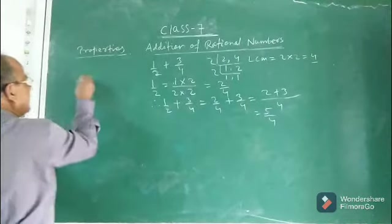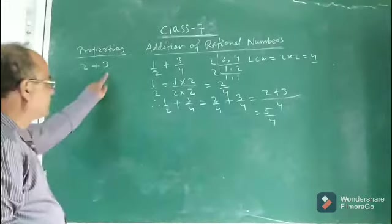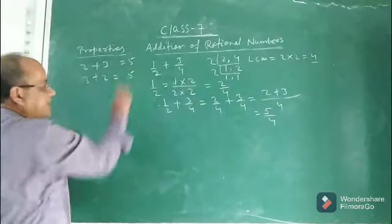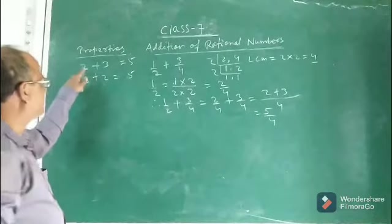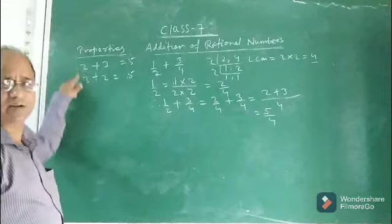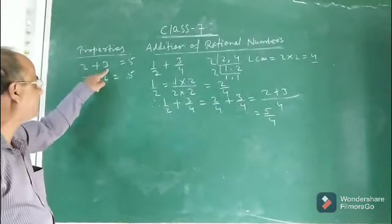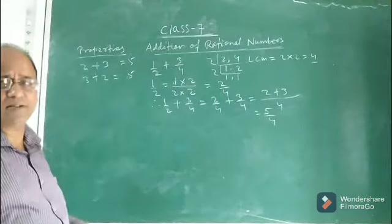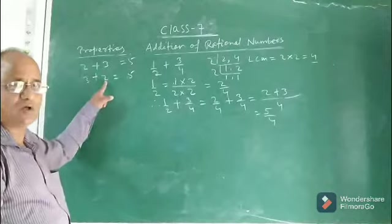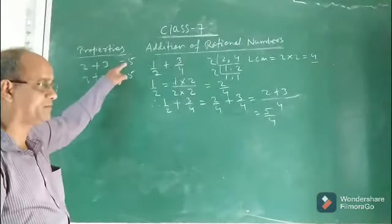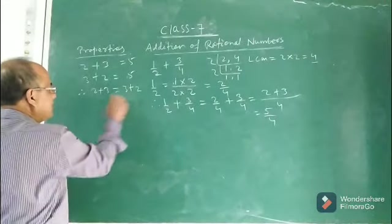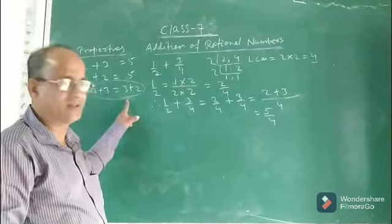Children, in junior classes you know: if I ask what is the sum of 2 and 3, you easily say 5. Now if I ask what is the sum of 3 and 2, the answer is again 5. The observation is — whether we add 2 and 3 or 3 and 2, we get the same result. The difference is only the order of the addends. Addends are the numbers which we add. So 2 plus 3 equals 3 plus 2. This you have been feeling since class 2 or 3 level.